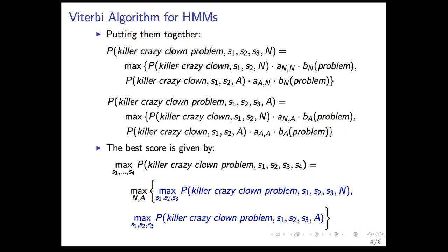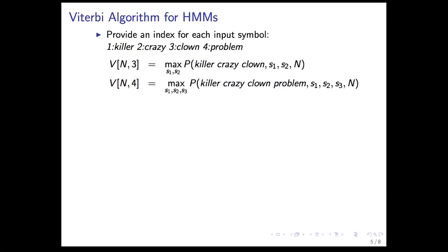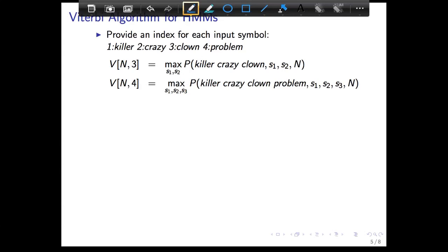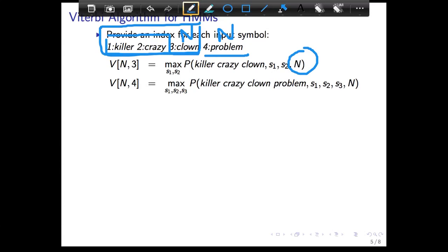This lays out the recursive decomposition that enables us to use the Viterbi table V, indexed by each state (N or A) and each symbol index. For each entry, we find the probability of the best sequence for the prefix up to that symbol ending in that state. We don't know what the best sequence for an earlier prefix is, but we assume we know it, extend it one symbol, and consider all possibilities — decomposing it incrementally.